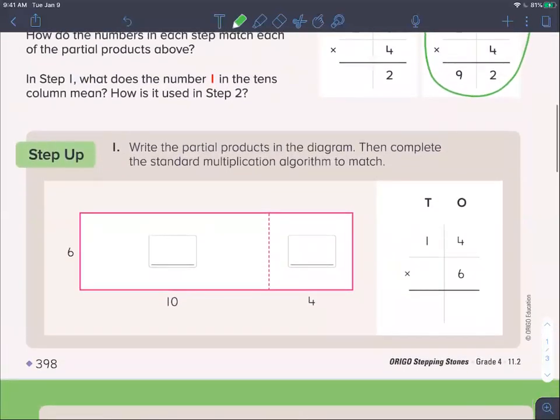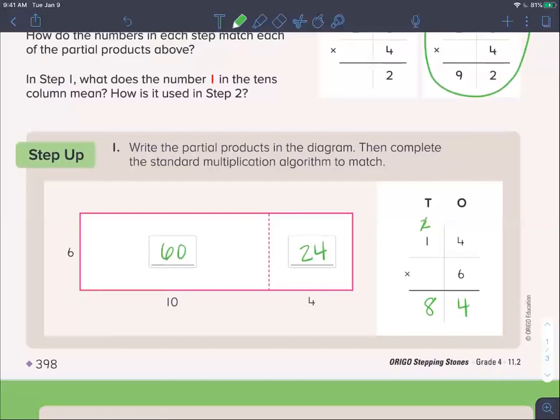Write the partial products in the diagram. Then complete the standard algorithm. 6 times 10 is 60, and 6 times 4 is 24. We can do that in our heads: 60 plus 24 is 84. Over here, let's do the traditional algorithm. 4 times 6 is 24. I do have to regroup. 1 times 6, or 1 ten times 6, is 6 tens plus 2 is 8, and we get 84 there too.